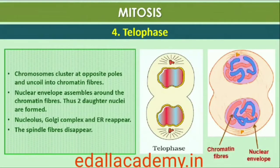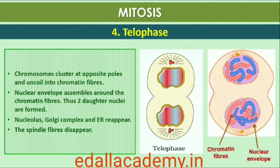At the beginning of the final stage of mitosis, telophase, the chromosomes that have reached their respective poles decondense and lose their individuality. The individual chromosomes can no longer be seen and chromatin material tends to collect in a mass at the two poles. Key events: chromosomes cluster at opposite spindle poles and their identity is lost as discrete elements; nuclear envelope reassembles around the chromosome clusters; nucleolus, Golgi complex, and ER reform.